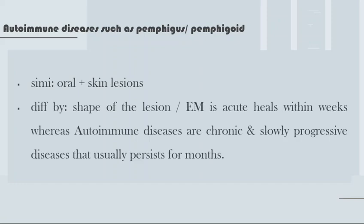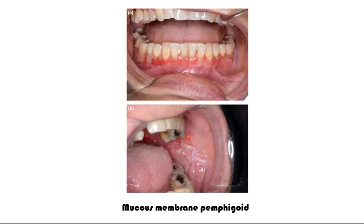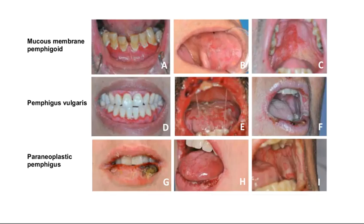How to differentiate? Differentiate by the shape of the lesion. Erythema multiforme is acute and heals within weeks, whereas autoimmune diseases are chronic and slowly progressive. Pemphigus and pemphigoid can take months to heal. This is mucous membrane pemphigoid — the extensive form we saw earlier. Here you can see mucous membrane pemphigus vulgaris and another type of pemphigus.